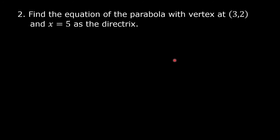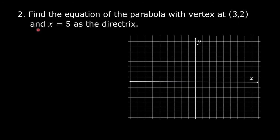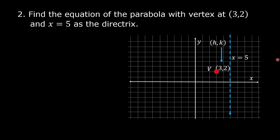Example number 2: Find the equation of the parabola with vertex at point (3, 2) and x = 5 as the directrix. Plot the point (3, 2) and graph x = 5 on the coordinate plane. The vertex has coordinates (3, 2), so h = 3 and k = 2. The directrix gives h minus p = 5. Since the vertex is at the left side of the directrix, the parabola opens to the left.